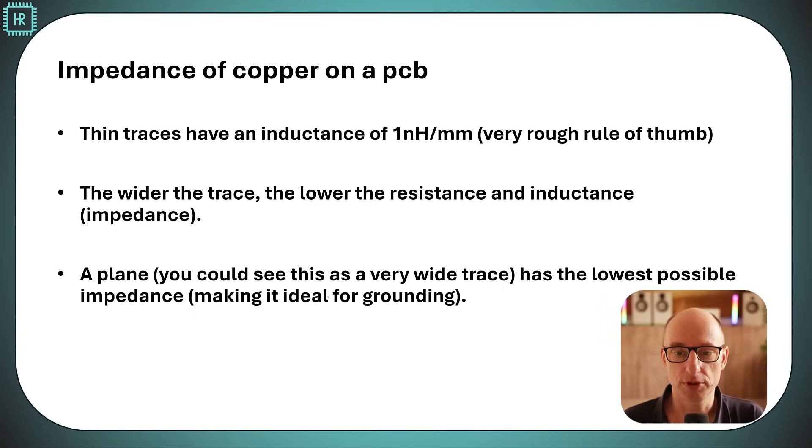Let's talk about impedance of copper on the PCB. There are a few simple rules of thumb you can follow. Thin traces have an inductance of 1 nanohenry per millimeter. If you have a very thin trace, say 0.2 millimeters, and it's 10 millimeters long, then you've got roughly 10 nanohenries. The wider a trace is, the lower the resistance and inductance, so the impedance is lower. Resistance is logical because you get more copper, so less DC resistance. Inductance may be less intuitive, but the surface area determines the inductance. A plane, you could see as a very wide trace, has the lowest possible impedance. That's why it's incredibly useful to use it for grounding.